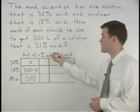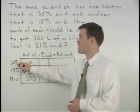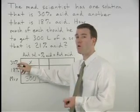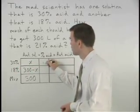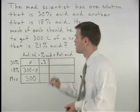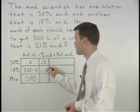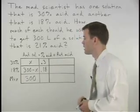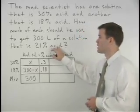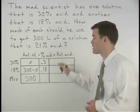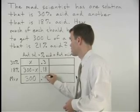For our percent acid column we have 30% which is 0.30 or 0.3, 18% which is 0.18, and we know that our mixture is 21% acid or 0.21.